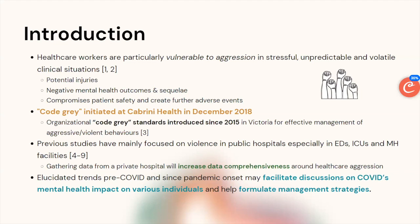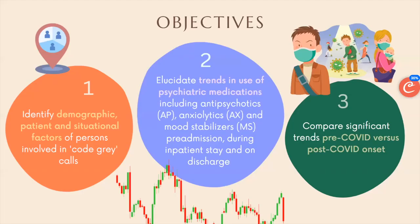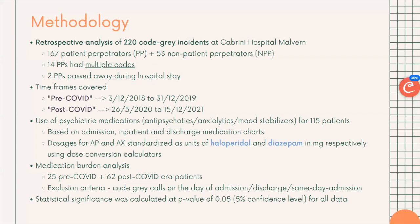Previous studies have mainly focused on violence in public hospitals in specific settings. Gathering data from a private hospital like Cabrini helps increase data comprehensiveness. We also took the opportunity to elucidate trends pre- and post-COVID, which could facilitate discussions on COVID's mental health impact and help formulate management strategies. The aims were to identify demographic, patient, and situational factors involved in code gray calls; elucidate trends in psychiatric medication use including antipsychotics, anxiolytics, and mood stabilizers across pre-admission, inpatient, and discharge timepoints; and compare trends pre- and post-COVID.